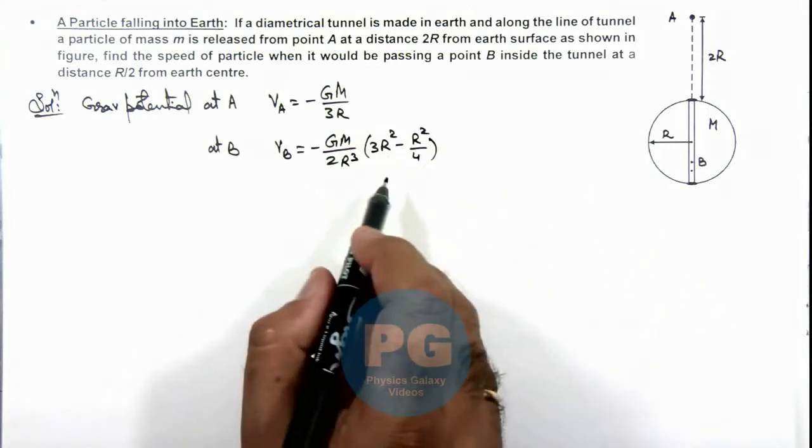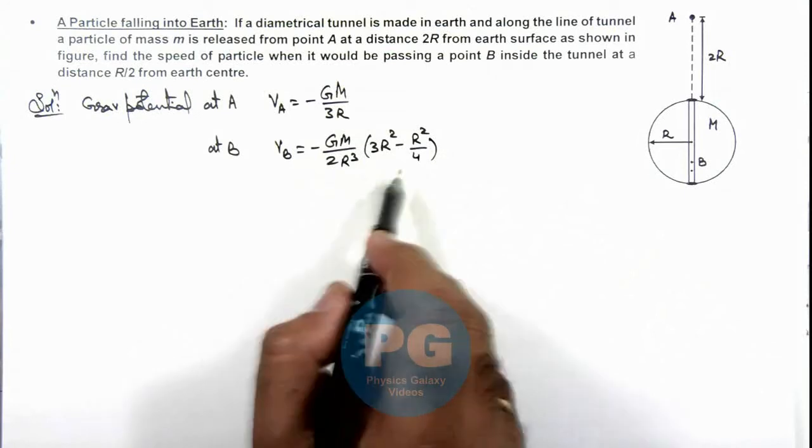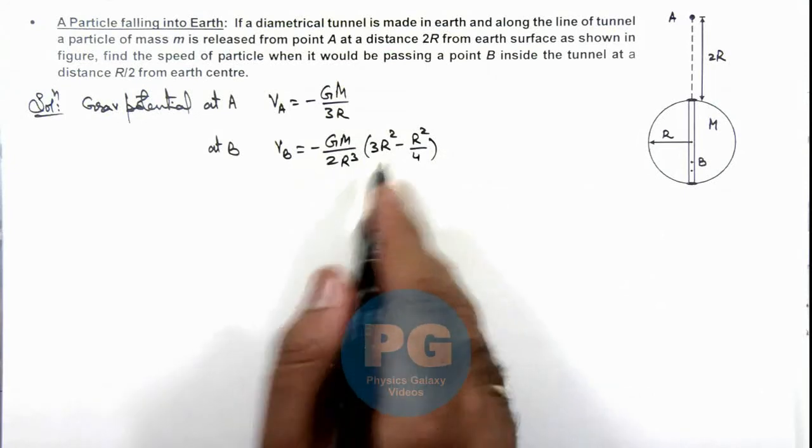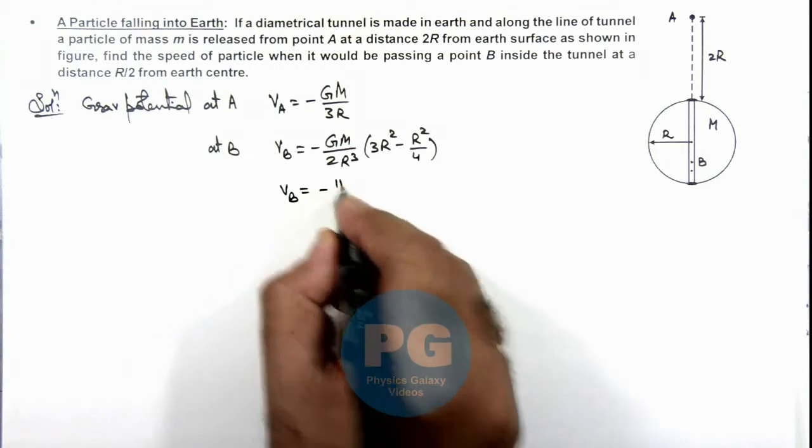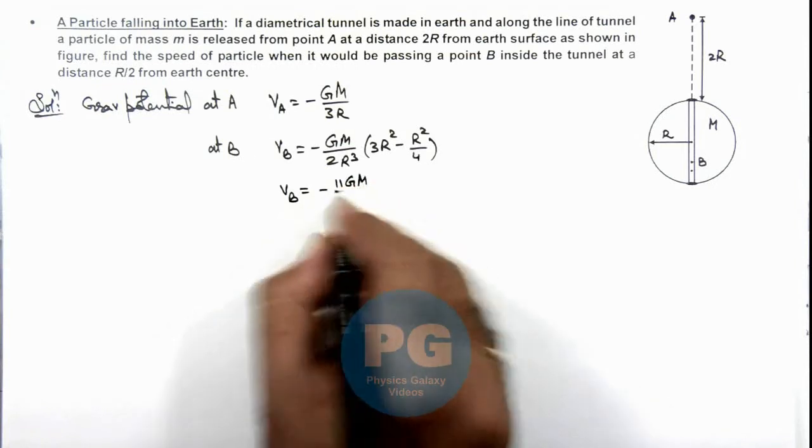I hope all of you can recall these expressions which we have studied in concept videos. So here the value of gravitational potential we are getting is minus 11GM by 8R.